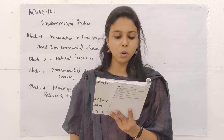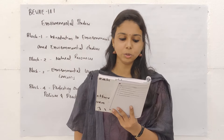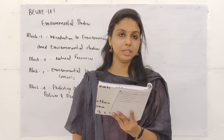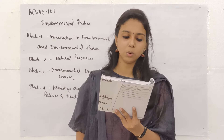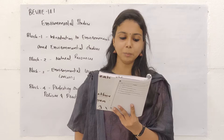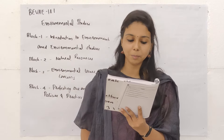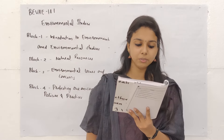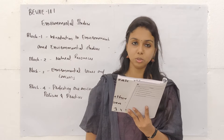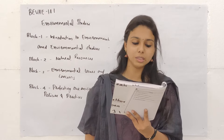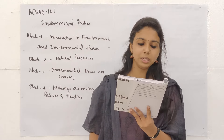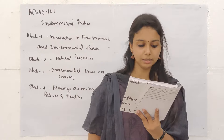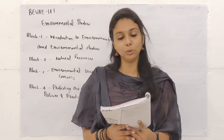Fourth question: Holding a meeting in a remote location to minimize public participation is an example of what? Options: A. Geographical Iniquity, B. Procedural Iniquity, C. Social Iniquity, D. Economic Iniquity. Option C is the correct answer — Social Iniquity.